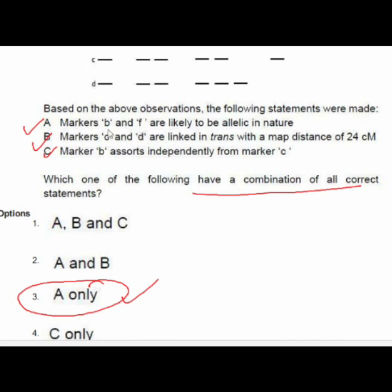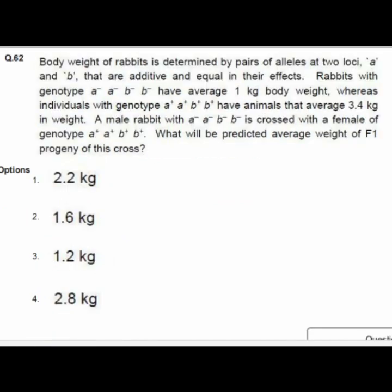Question 62: Body weight in rabbits is determined by additive alleles at two loci A and B. Rabbits with genotype A-A-B-B- average 1 kg, while A+A+B+B+ individuals average 3.4 kg. A male A-A-B-B- crossed with female A+A+B+B+: the predicted average weight of F1 progeny is option 1 — 2.2 kg.